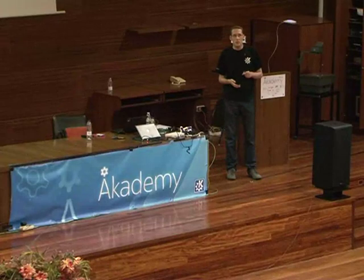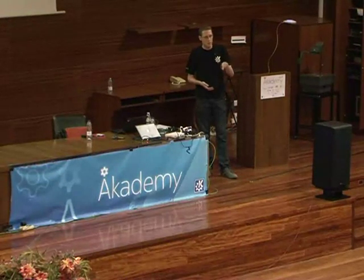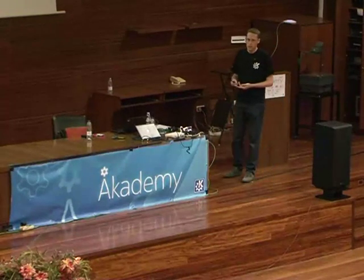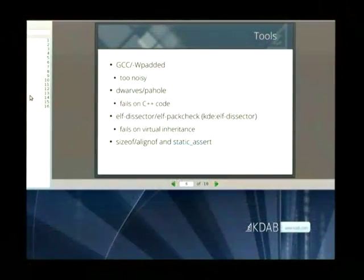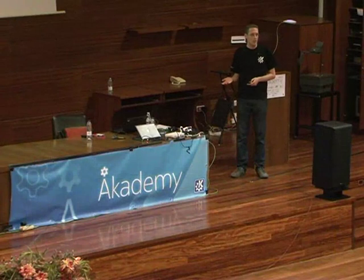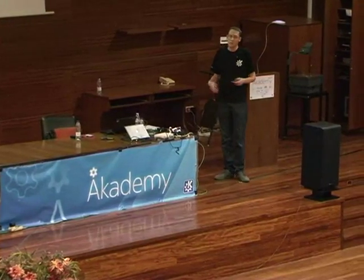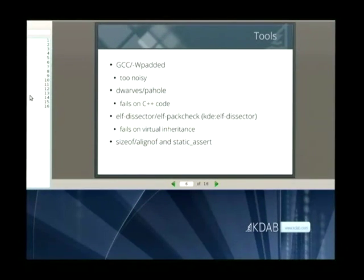It would be useful to have tools that introspect data structures and identify padding. Both the compiler and debugger need to know the memory layout, so information should be available there too. GCC actually has a warning switch that warns about every bit of padding, but it's extremely noisy—it also warns about unavoidable cases where reordering can't help. Getting warnings for all unavoidable cases in a KDE-scale codebase isn't really useful.